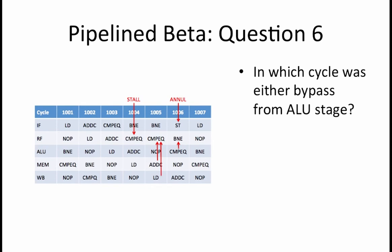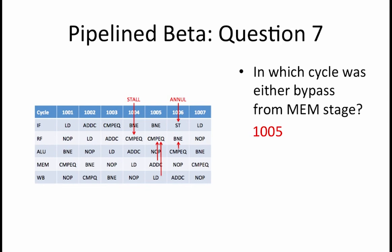Next, we want to consider our bypass paths. In which cycle was either bypass path coming from the ALU stage? In cycle 1006, the BNE reads the result of the compareEqual instruction from the ALU stage. In which cycle was either bypass coming from the MEM stage? In cycle 1005, the compareEqual reads the result of the ADDC instruction from the MEM stage.